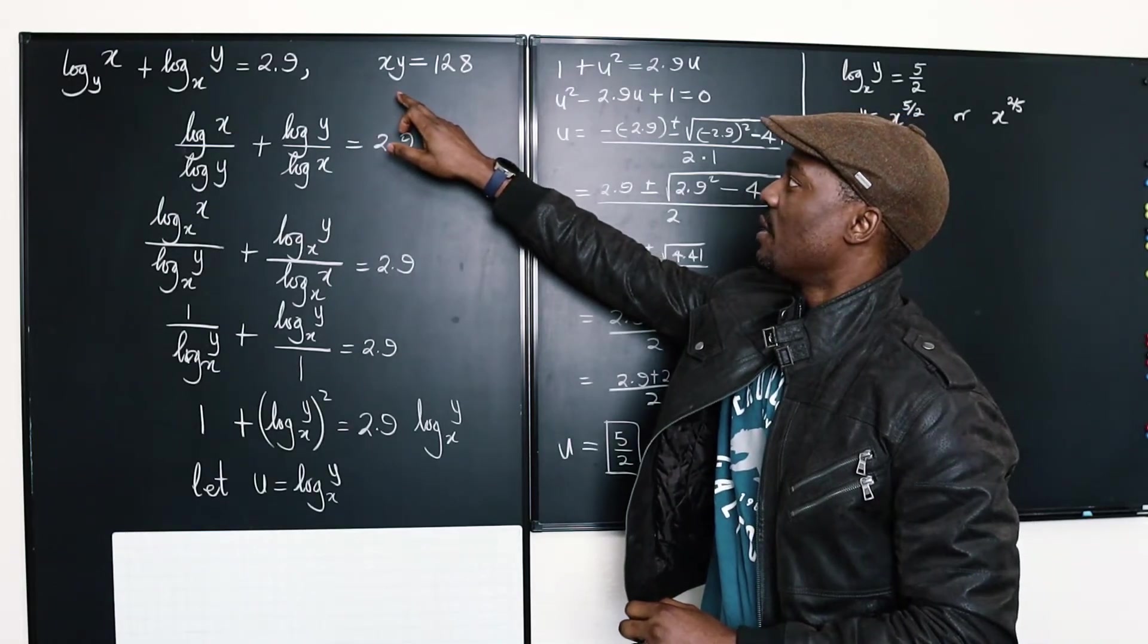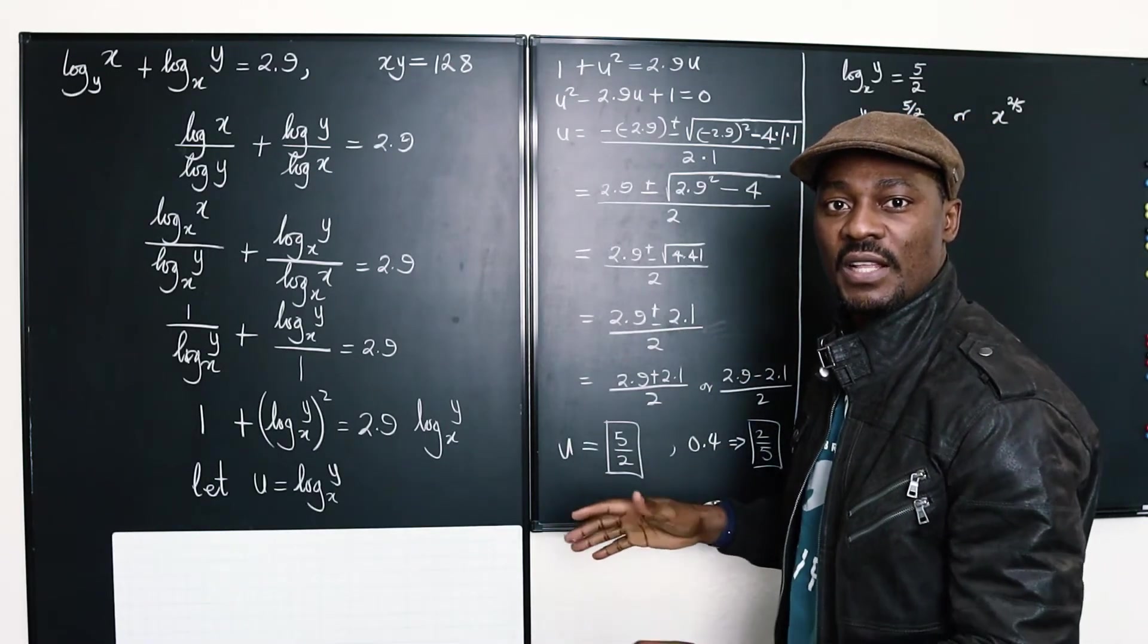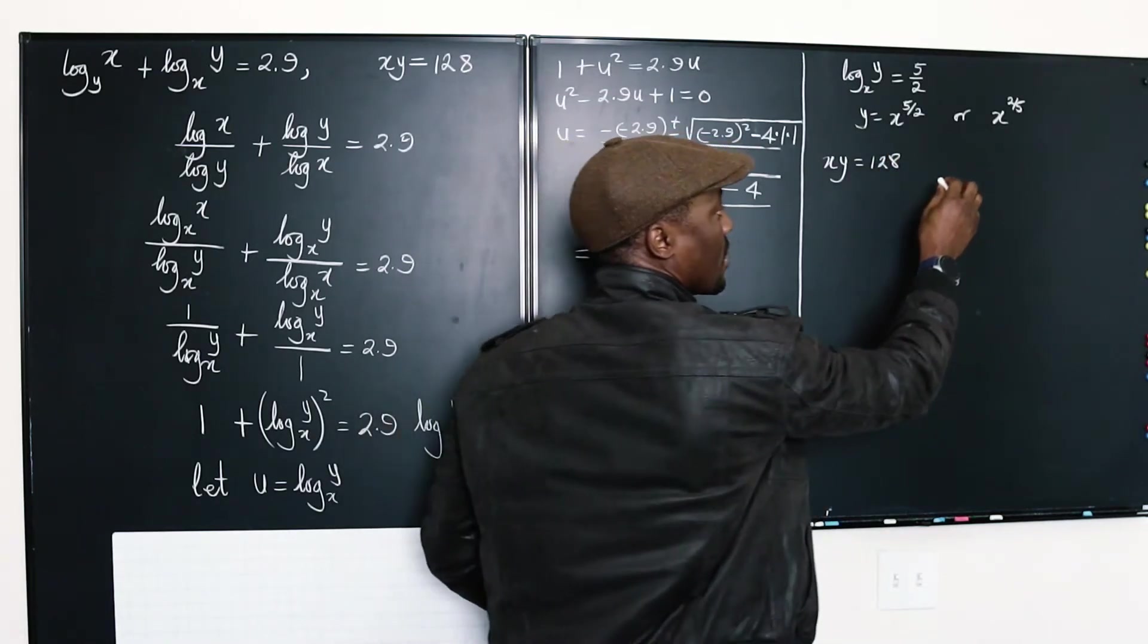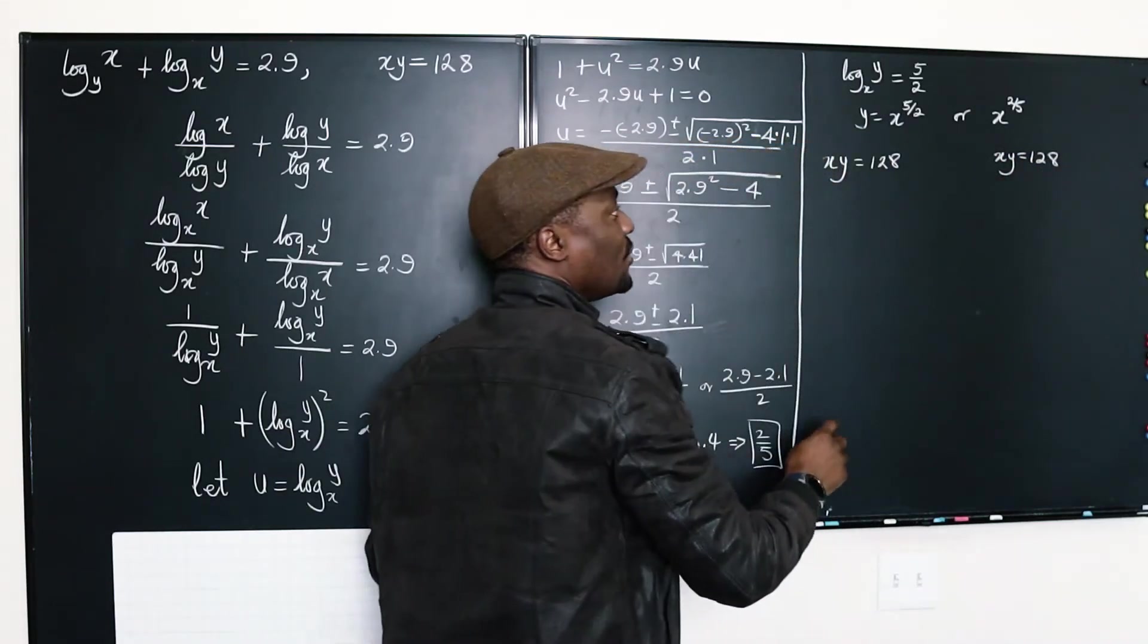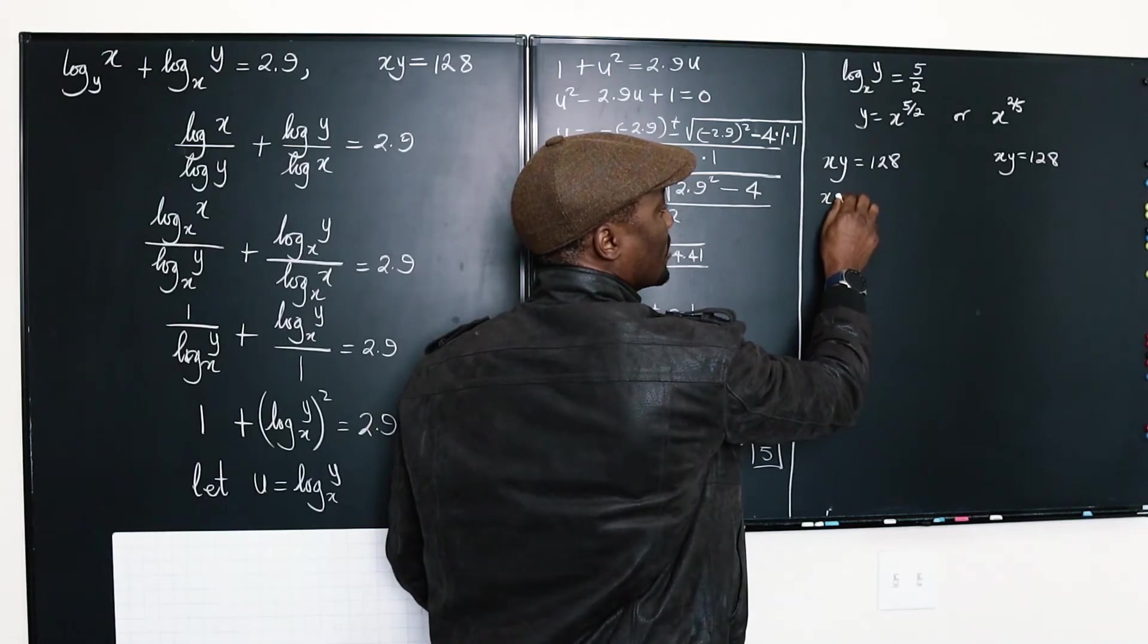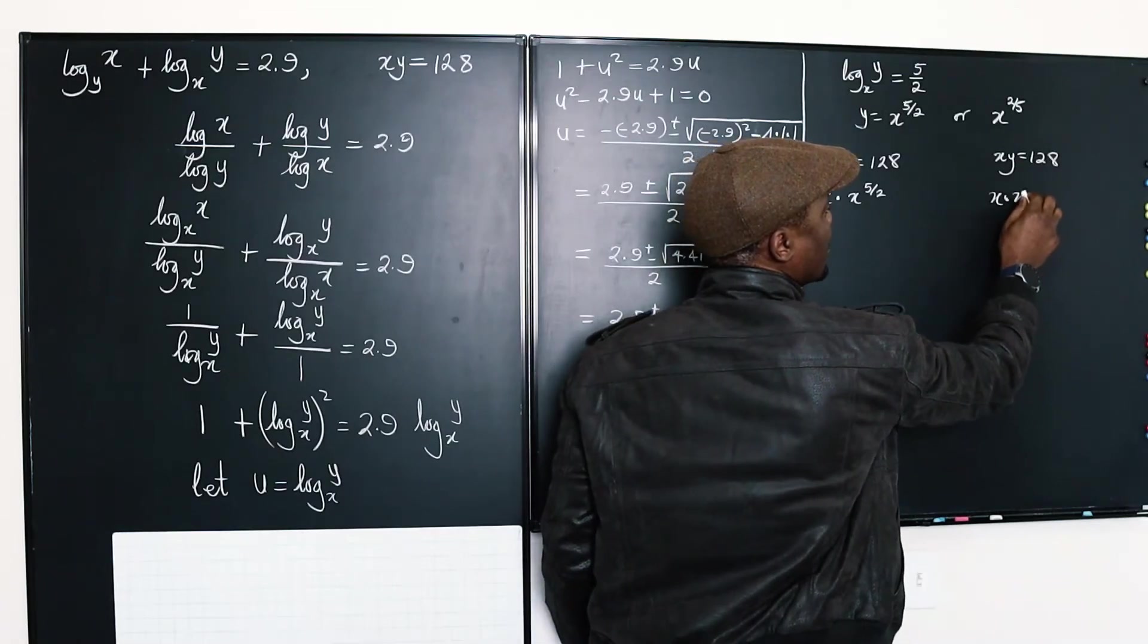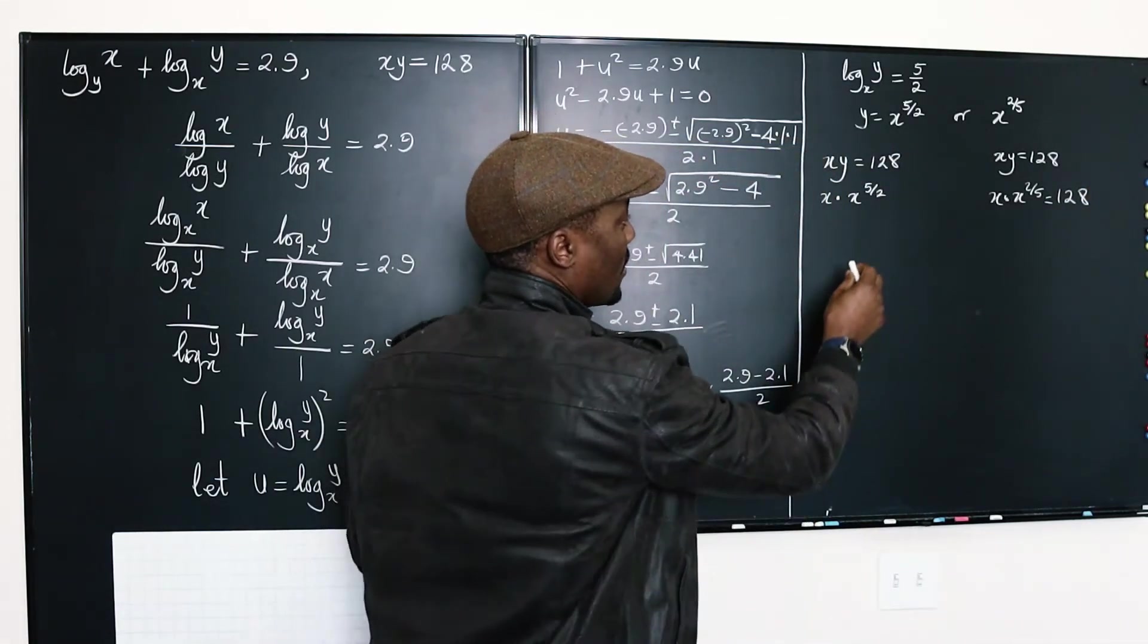So using the values of xy, x times y equals 128, we can as well just come here and use that and solve this. Let's get to the end. So we have xy equals 128. Or we have the other side, we have xy equals 128. We just need to replace y with something in terms of x. So this is going to be x multiplied by x to the 5 over 2. And do the same thing. It's going to be x multiplied by, well, this is now x to the 2 over 5 equals 128. And this also is 128.